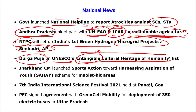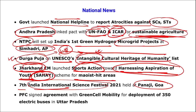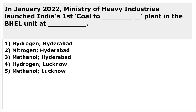Jharkhand's Chief Minister launched SAHAI scheme — full form: Sports Action Toward Harnessing Aspiration of Youth — for Maoist-hit areas. The 7th India International Science Festival was held at Panaji, Goa. PFC signed an agreement with Green Cell Mobility for the development of 350 electric buses in Uttar Pradesh. Uttar Pradesh became the state with the most sales of electric vehicles.